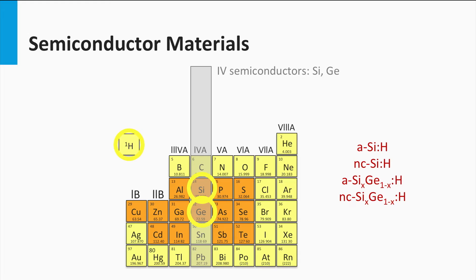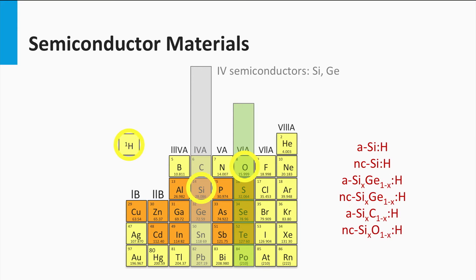The second alloy is silicon mixed with the next element in the periodic table with 4 valence electrons: germanium. Both hydrogenated amorphous and nanocrystalline silicon-germanium alloys are used in thin film silicon solar cells. Silicon is also mixed with carbon, another 4 valence electron material, leading to hydrogenated amorphous silicon carbide. Another interesting silicon-based alloy incorporates the 6 valence electron atom, oxygen, into the lattice — this nanocrystalline silicon oxide is also used in thin film silicon solar cells.